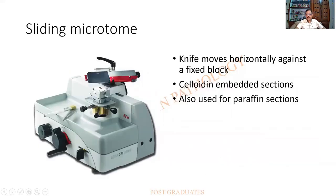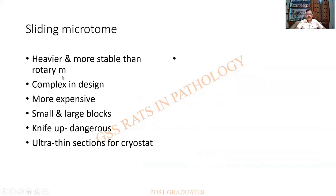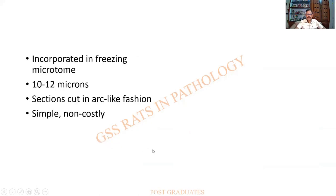The sliding microtome is another modification in which the knife moves in an arc-like manner against a fixed block, so sections will be slightly arc-shaped. Celloidin embedding sections can be used. It is heavier and more stable than a rotary microtome, but complex in design and expensive. It is used for cutting small and large blocks. The knife position can be dangerous for the technician. Ultra-thin sections can be cut for cryostat use. Sections are thicker — 10 to 12 microns — and arc-shaped, which is a disadvantage; however, it is simple and not very costly.